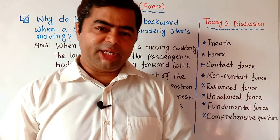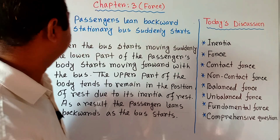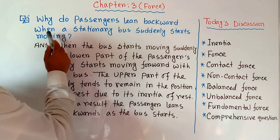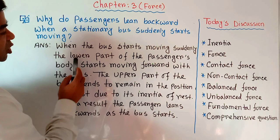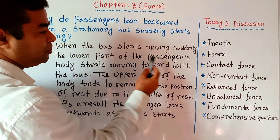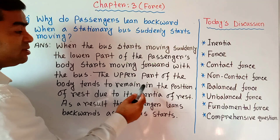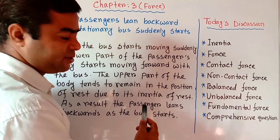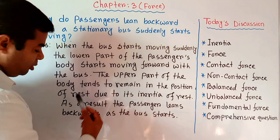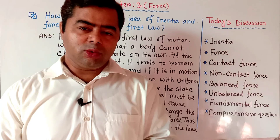Comprehensive question two: why do passengers lean backward when a stationary bus suddenly starts moving? When the bus starts moving suddenly, the lower part of the passenger's body starts moving forward with the bus. The upper part of the body tends to remain in the position of rest due to its inertia of rest. As a result, the passengers lean backward as the bus starts.